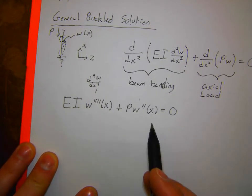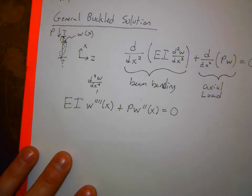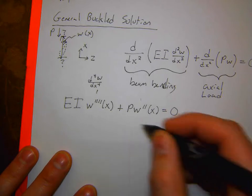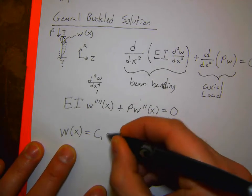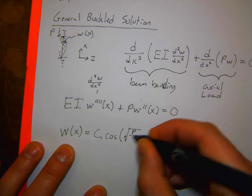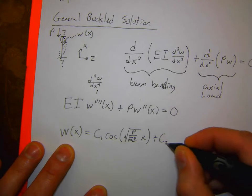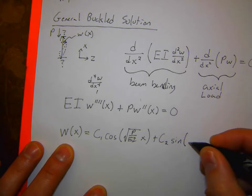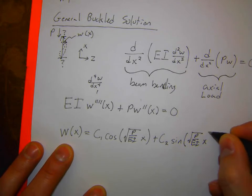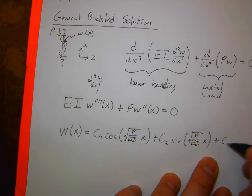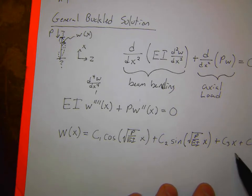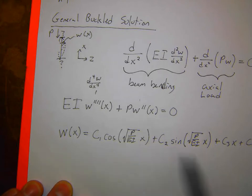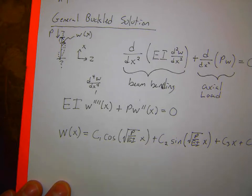The general solution to this fourth-order ODE is: w(x) = C1·cos(√(P/EI)·x) + C2·sin(√(P/EI)·x) + C3·x + C4. This is the full general solution to the deflection of a beam that has been buckled with some axial load P.